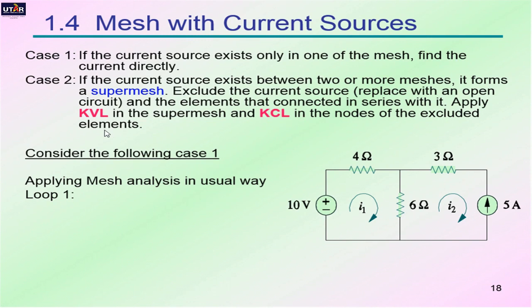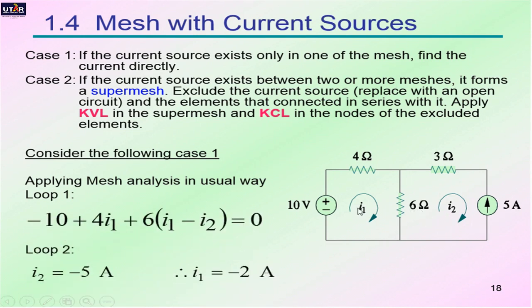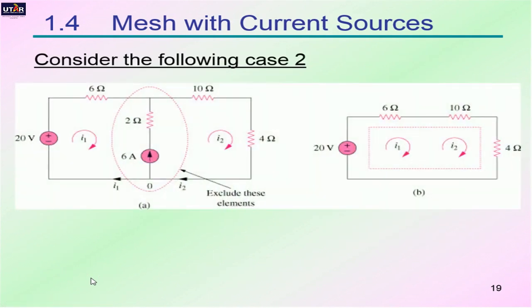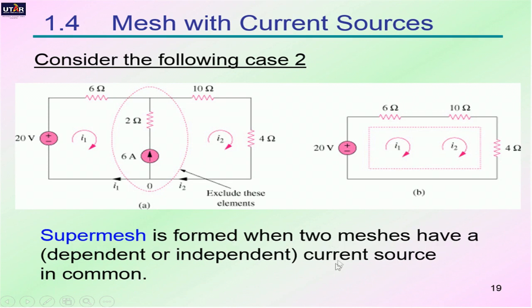Here's a typical mesh example which can be solved using standard mesh analysis. With two meshes, we obtain two sets of equations, giving I1 equals negative 2 ampere and I2 equals negative 5 ampere. But in this second circuit, the current source falls in the middle of two meshes, so we must use super mesh. We extract the branch containing the current source — after extracting it, the remaining circuit looks like a single super mesh. A super mesh is formed when two meshes share a current source in common.